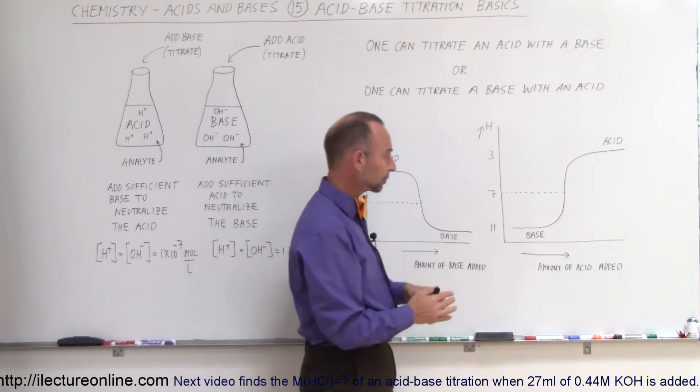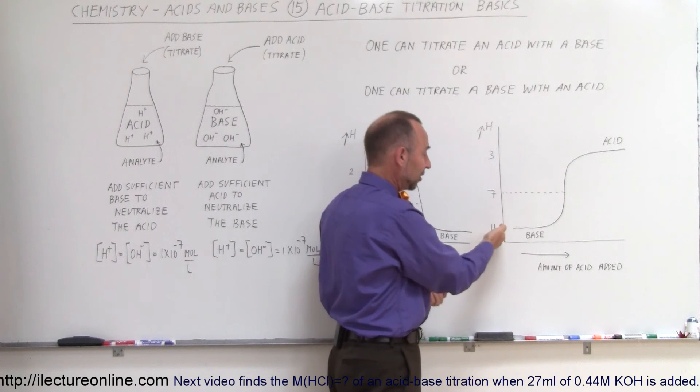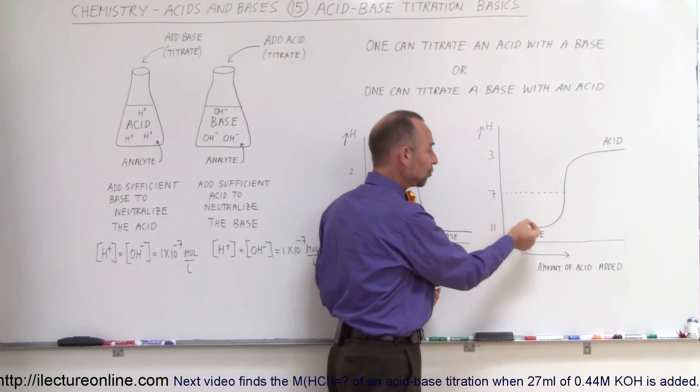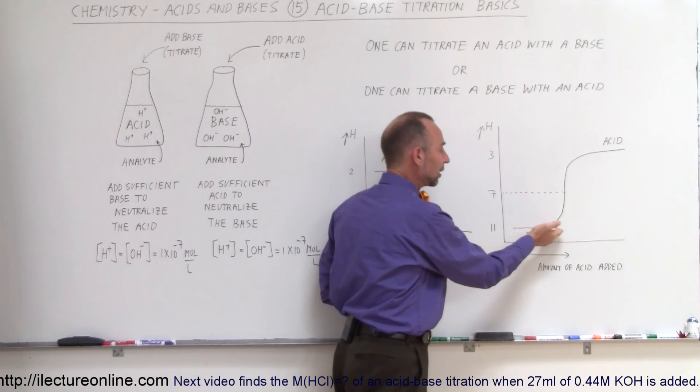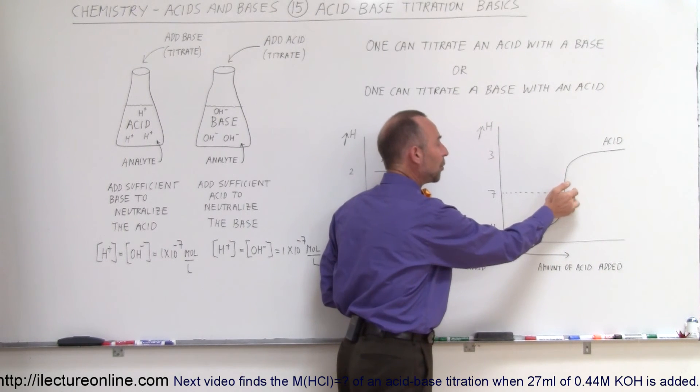You can see the diagram here. A base will start at pH 11, and you keep adding small drops of acid to it. Eventually, the concentration will reach the equilibrium point.